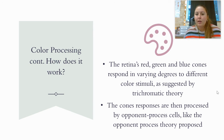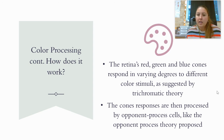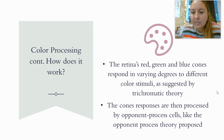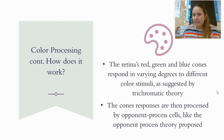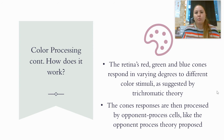How does color processing work? Basically, both theories are correct. The retina's red, green, and blue cones do respond in varying degrees to different color stimuli. But the cones' responses also process through opponent process cells, as the opponent process theory proposed. So yes, there are red, green, and blue cones working in combination to create color, but the trichromatic theory alone doesn't explain afterimages — opponent process cells working in the cones help explain that.